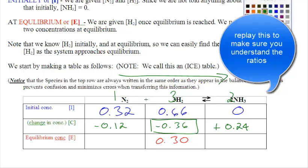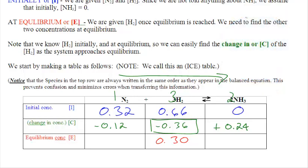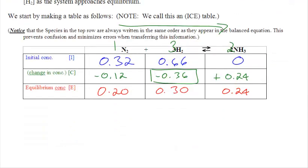Now that we know the changes, we can find the total equilibrium concentrations. We're almost done the question. It started at 32, went down by 12, it's now at 20. This started at 0, went up by 24, it's now at 24. So we now know how this equilibrium started, how it changed, and how it ends.